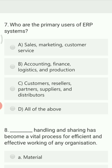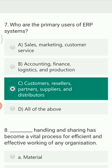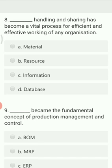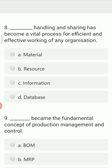The next question is: who are the primary users of an ERP system? Option A is sales, marketing, and customer services. Option B is accounting, finance, logistics, and production. Option C is customers, resellers, partners, suppliers, and distributors. Option D is all of the above. Option C is the right answer, though accounting, finance, logistics, and production are also primary users, so all of the above could also apply.